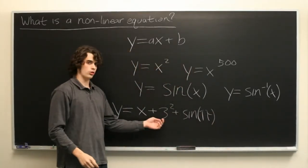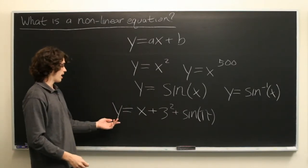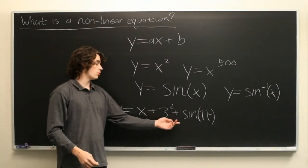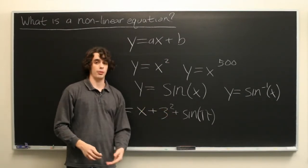Well, 3 squared is just 9, which is a constant. And sine of pi is also a constant. So really, we just have a linear equation with two constants, but those constants are expressed using exponents and trigonometric functions.